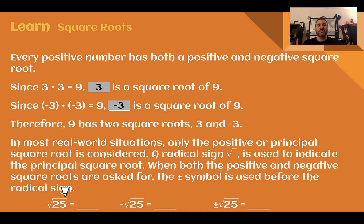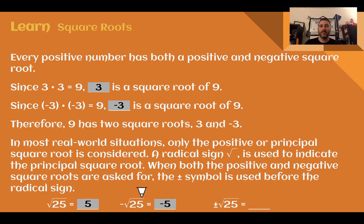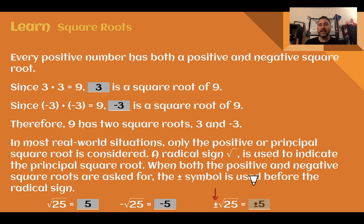Here we have just the square root of 25. There's no sign out front, so it just wants the positive, which is 5 — since 5 times 5 is 25. Next we have negative square root of 25, asking for the negative answer, so negative 5. And last we can see our plus or minus symbol, so we need that in our answer. The square root of 25 is 5, so here would be plus or minus 5 to show both answers.